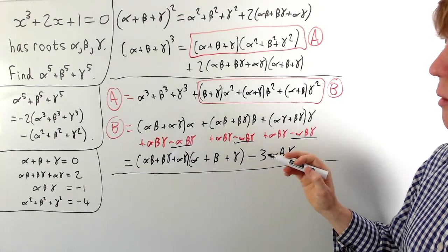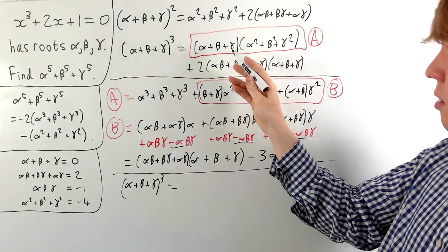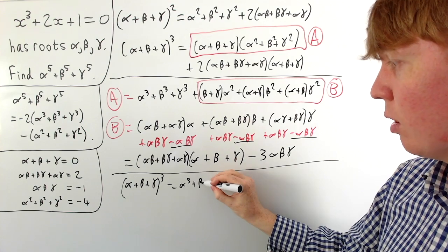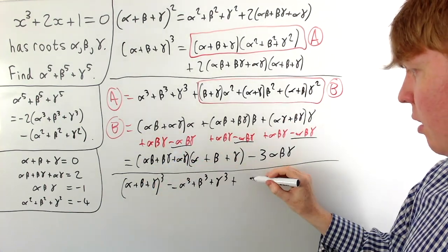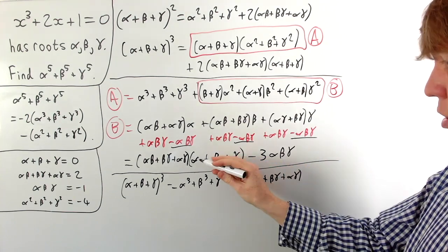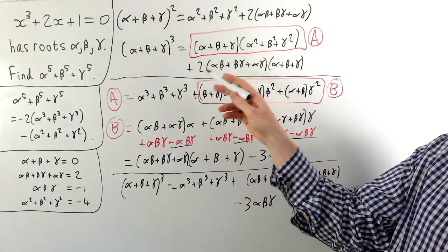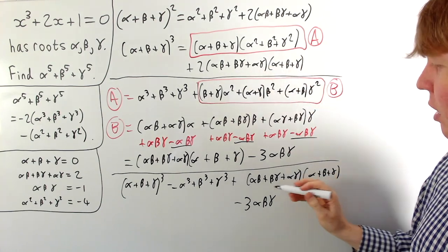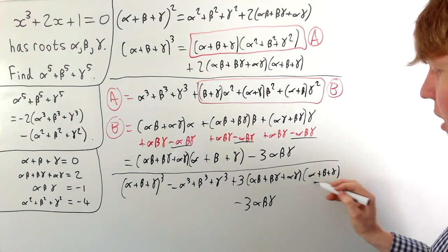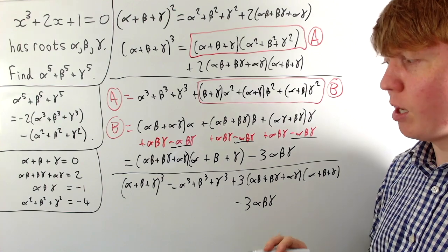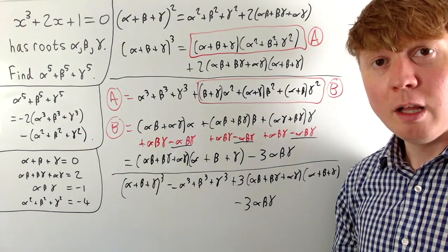Substituting back, alpha plus beta plus gamma all cubed equals the sum of cubes, plus three times the sum of pairs times the sum of roots, minus three times alpha beta gamma. This gives us a usable equation to find the sum of cubes, which we can then use to find the sum of fifth powers.